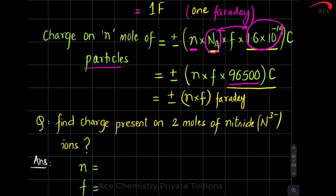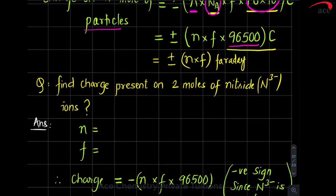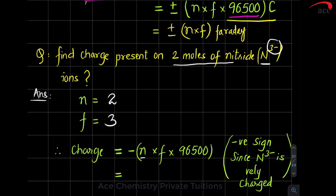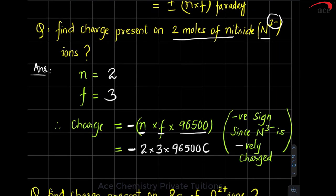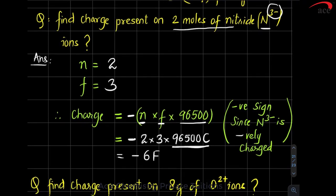Numerical: find the charge present on 2 moles of nitride ions (N³⁻). Moles = 2, factor = 3 (magnitude of charge on N³⁻). Charge = −2 × 3 × 96,500 coulombs (negative because negatively charged ion) = −6 × 96,500 coulombs = −6 Faraday.